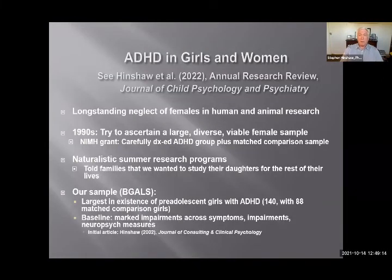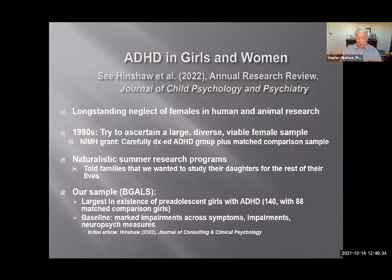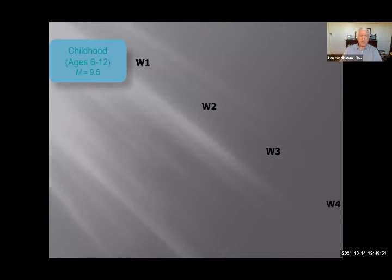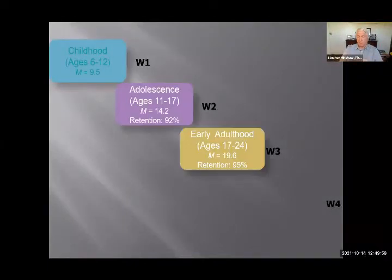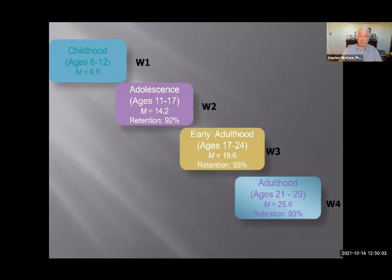For our last topic, we'll talk about ADHD in girls and women. I wrote a grant to the NIMH 27 years ago proposing that ADHD really does exist in girls more than the field thinks, and we used a summer camp model to study them in an ecologically valid context. We got tons of data from those summer camps — 140 girls with ADHD — and we followed them systematically. We've been able to keep track of 92 to 95% of them into their mid-20s. We're now engaged in our fifth wave of follow-up when they're all in their 30s.